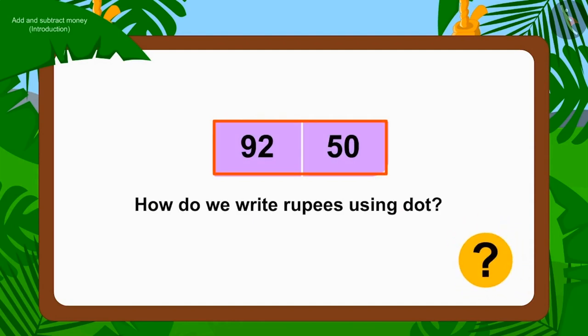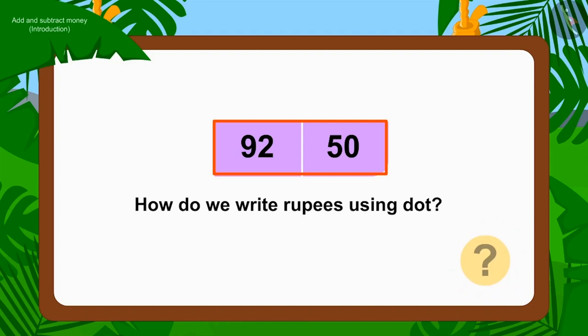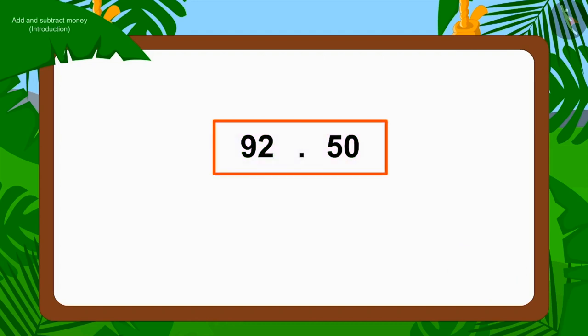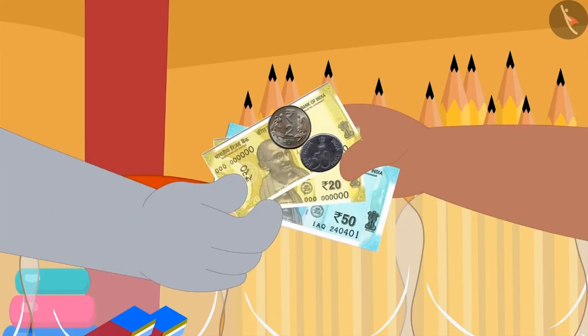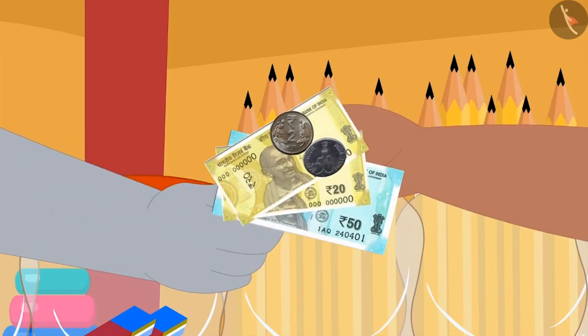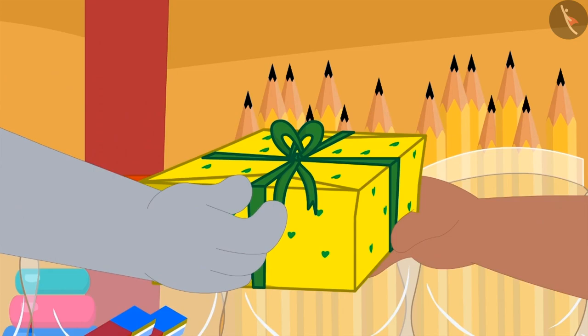How do we write this using dots as rupees? To the left of the point, we will write the number of rupees, and to the right, we place paise. The three together paid the price of hat and pencil and bought the gift.